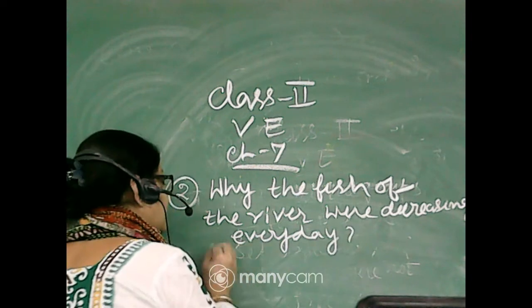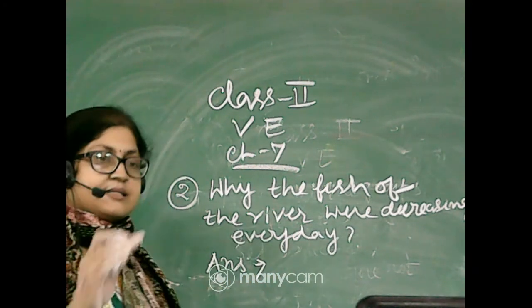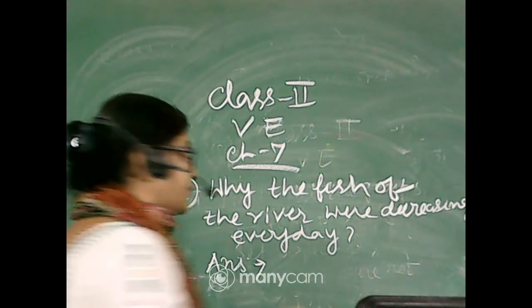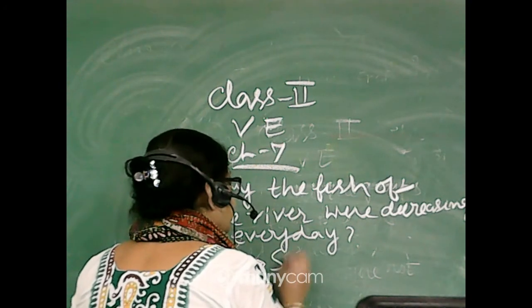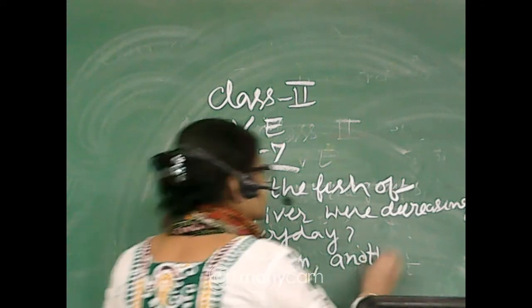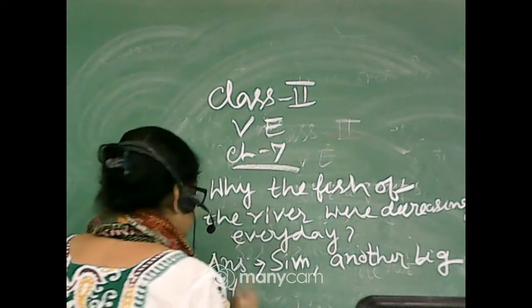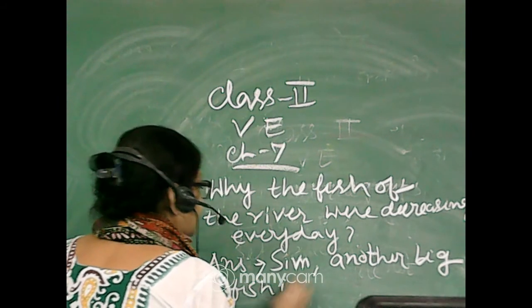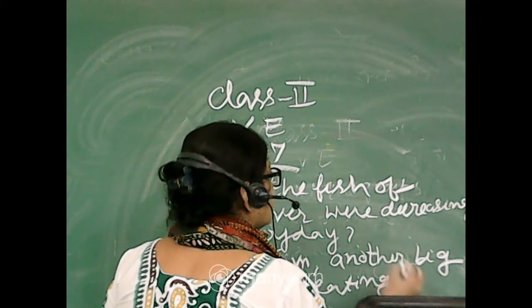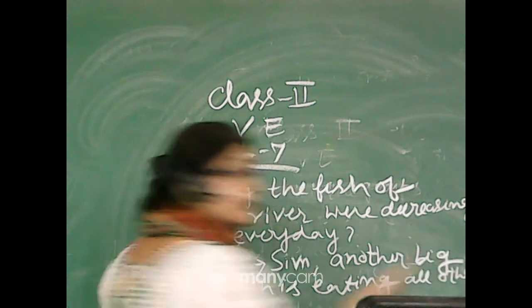What is the meaning of decreasing? Decreasing means less. It is becoming less. Because one big fish, Shim, is eating. Another big fish is eating all other small fish.